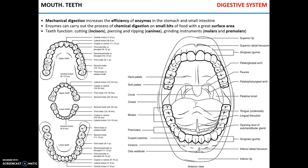Mechanical digestion starts in your mouth with chewing the food. The role of mechanical digestion is to increase the surface area of the food by breaking it into small bits, so that enzymes can carry out chemical digestion more easily.